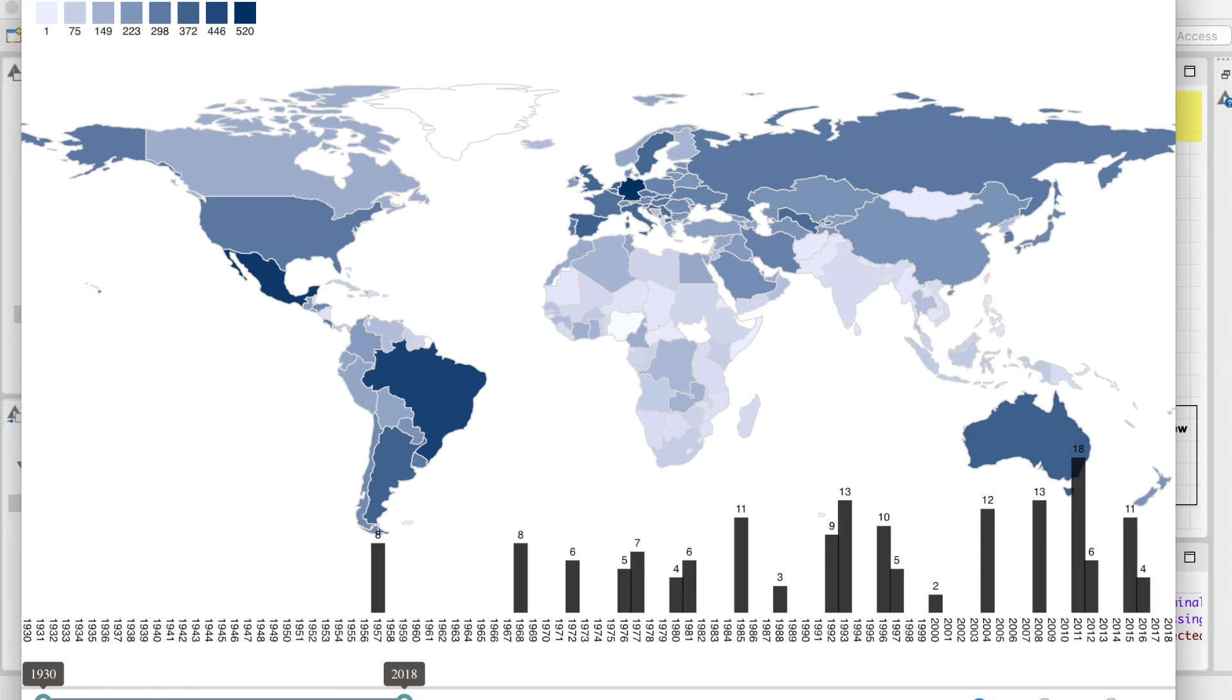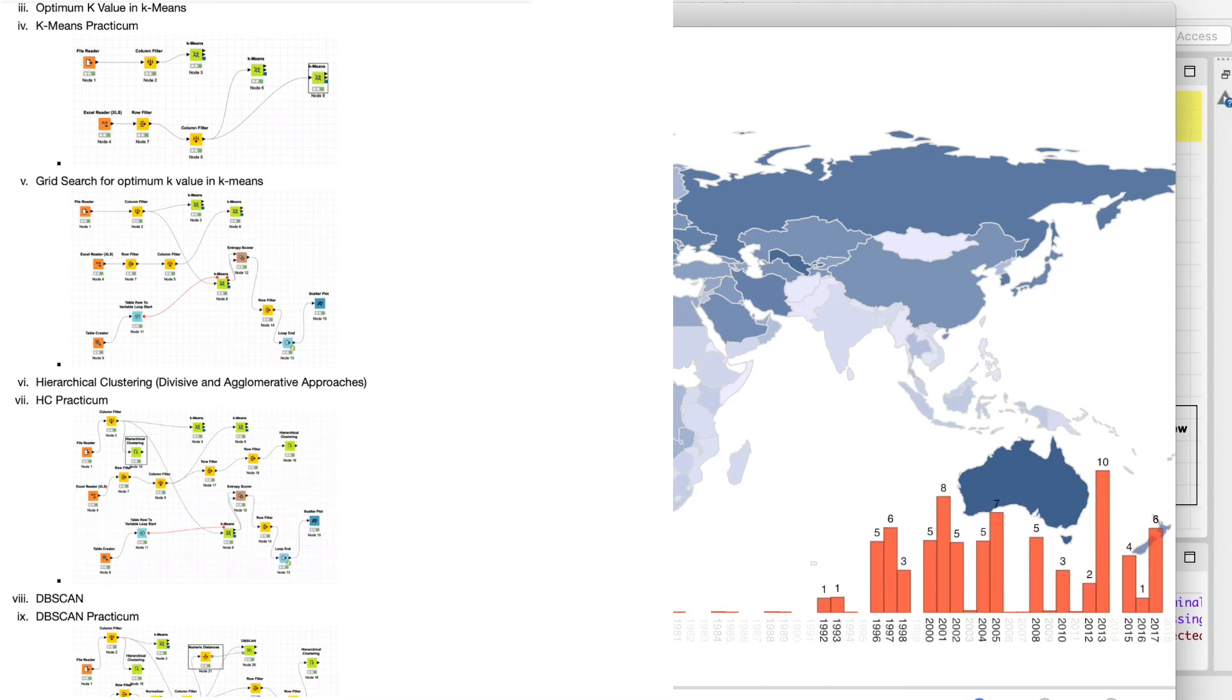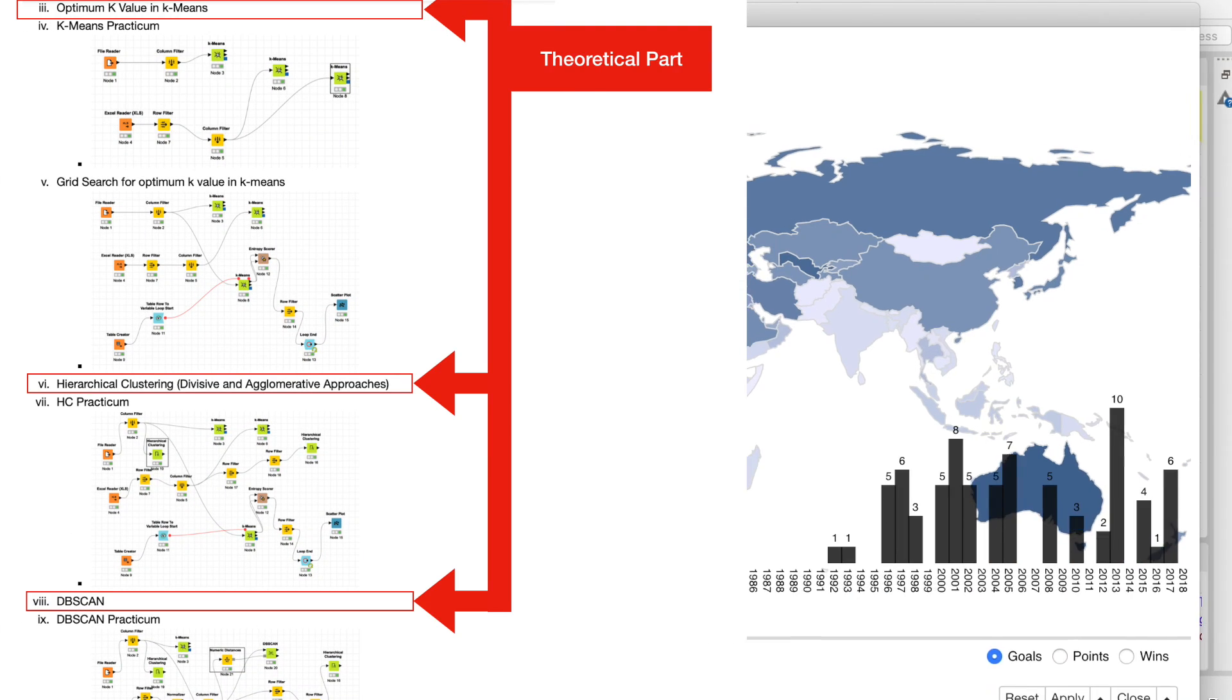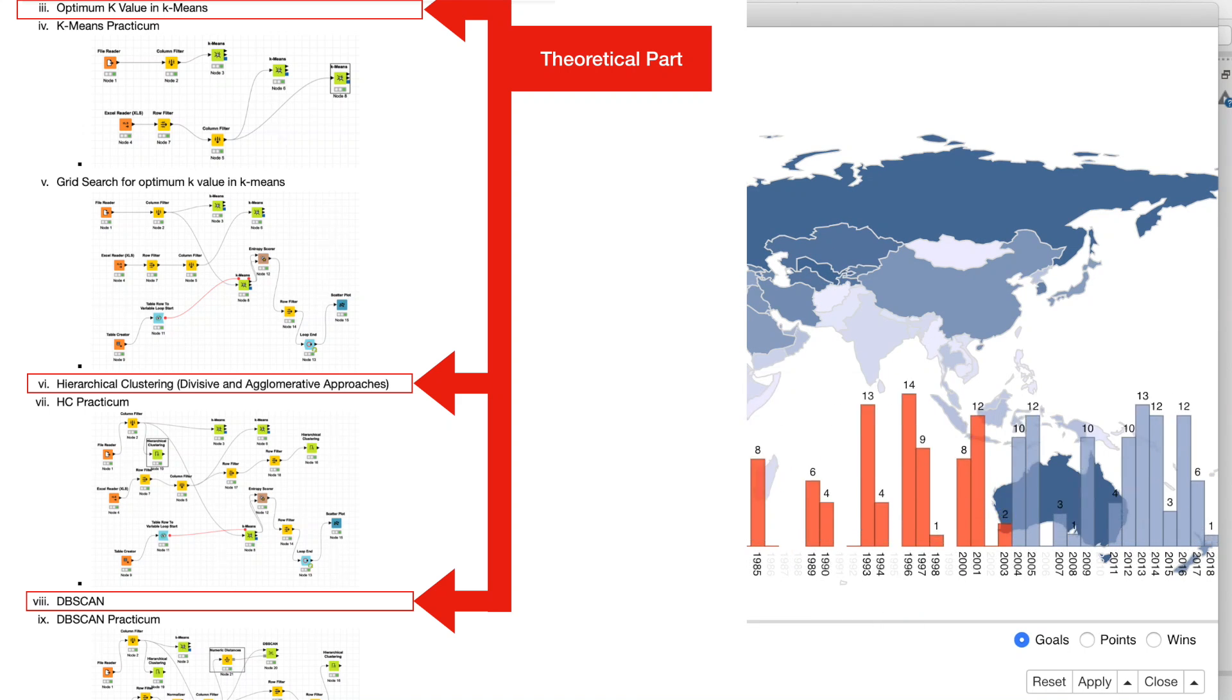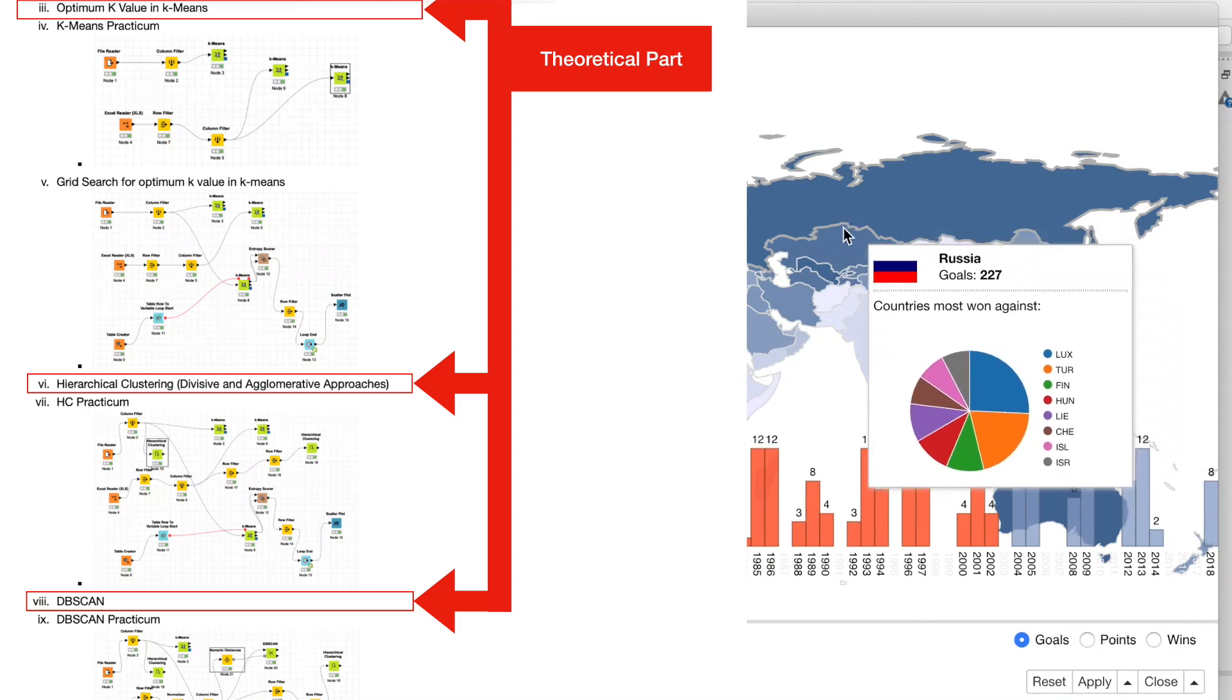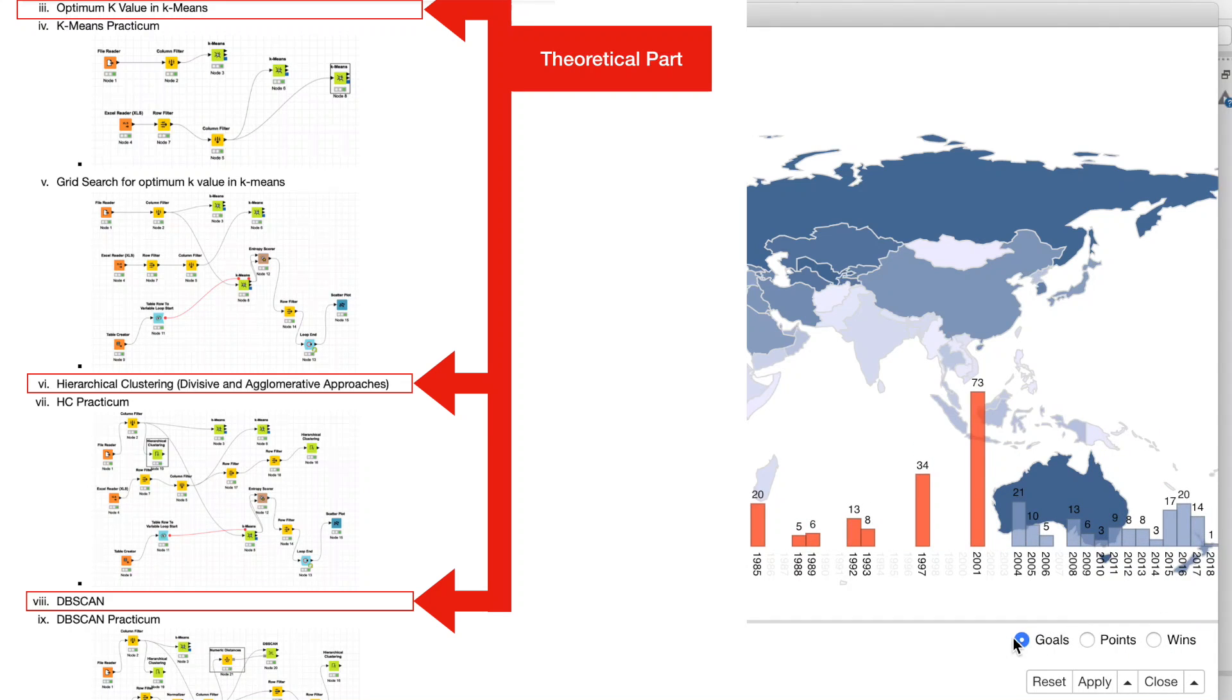One important note about the course: the course has two parallel tracks. In the first track I'm going to cover the theoretical part only. If you don't have any theoretical background, if you don't know anything about data science, machine learning or artificial intelligence, you can follow this track and build knowledge which is platform independent. You can use this knowledge in KNIME, SPSS, Python, R, or any environment in the data science industry.